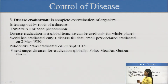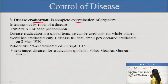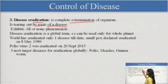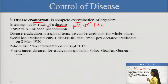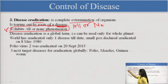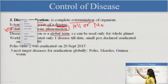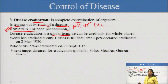The next stage after elimination is approaching for eradication. We want the complete extermination of the organism — the disease is not present anywhere. We are killing it by uprooting, tearing it out by its roots. This concept exhibits an all-or-none phenomenon — either it is present or not present. Disease eradication is a global term, whereas elimination is a geographical term. Eradication eliminates the disease from the whole world — it can only be used for the whole planet.